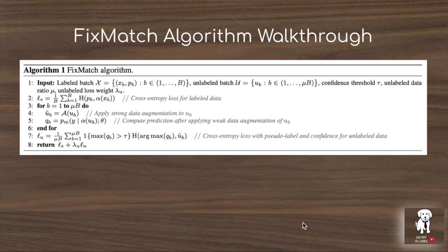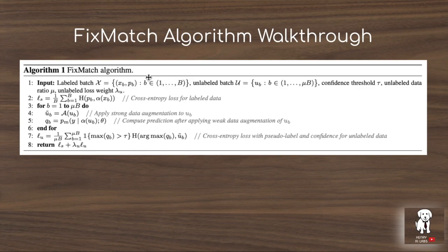To make this more concrete, we'll walk through the algorithm presented in the paper. The FixMatch algorithm takes as input a labeled dataset X, consisting of (x, y) pairs. If you're using the CIFAR-10 dataset, it might be an image of a frog with a label of 3. The capital B denotes the number of labeled examples — say 40, 250, or 1000 labeled images from CIFAR-10. Then we have the unlabeled dataset U, controlled by the parameter mu, the unlabeled data ratio. If mu is 5 and you're taking 50 labeled data points, you'll have 250 unlabeled data points.